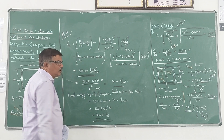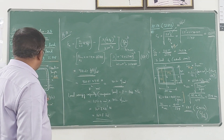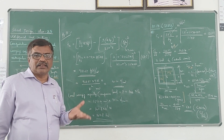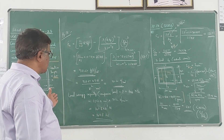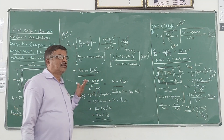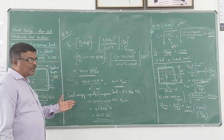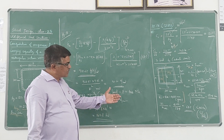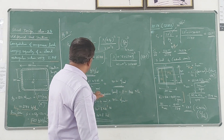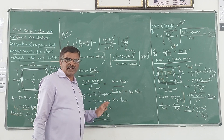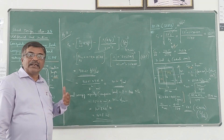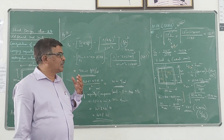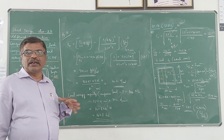This is the final load carrying capacity of this section over a length of 4 meters. If the length increases to 5 or 6 meters, the load capacity reduces. Conversely, if the length decreases, the load carrying capacity increases. This completes the example of finding the load capacity of a closed rectangular section.